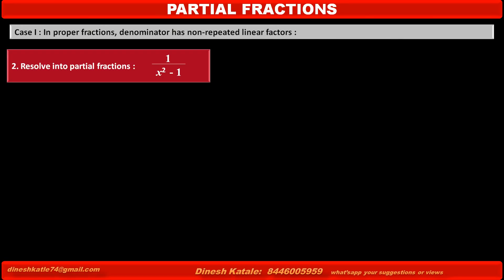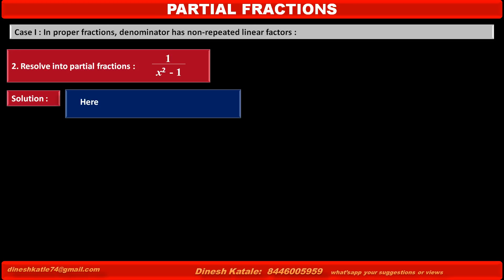Problem 2: Resolve into partial fractions — 1 upon x squared minus 1. The given fraction is 1 upon x squared minus 1. The denominator, x squared minus 1, can be factorized as x minus 1 into x plus 1. So the fraction equals 1 upon x minus 1 into x plus 1.